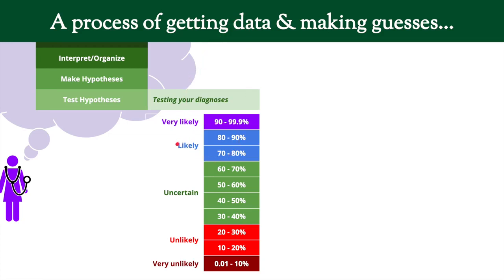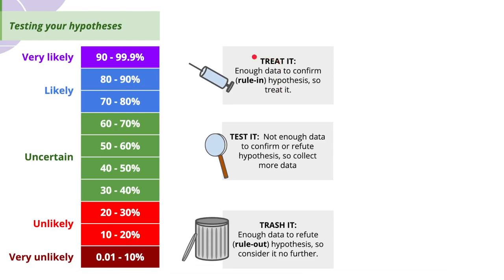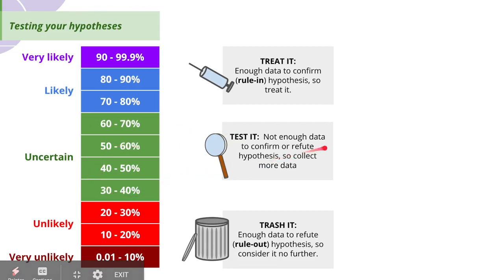Usually what we need to do is settle for good enough — convinced enough that the patient has it. Based on how likely you think something is, you go to one of three options. If you're pretty sure they don't have it, you might rule out that diagnosis and not consider it further — trash it. On the opposite end, if you're pretty sure they do have a diagnosis, you rule it in and start treatment — treat it. And in the middle zone, if you're not sure either way, you need to collect more information — that's the test it zone. So we have three zones: treat it, test it, and trash it.